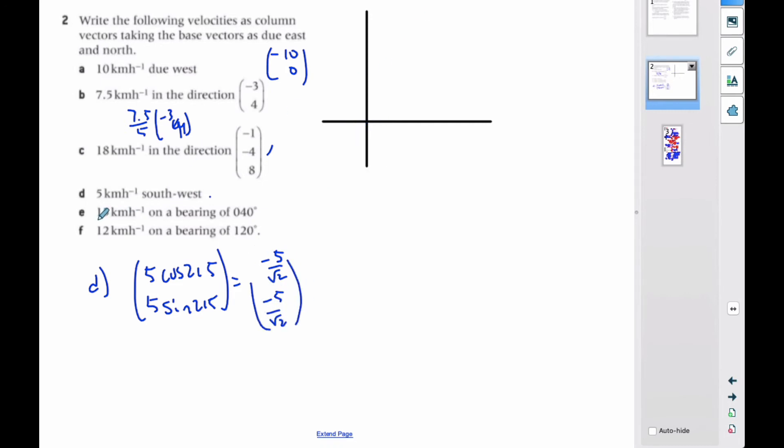So, I want to go E part, 15 kilometers on a bearing of 40 degrees. Well, bearings always start from north, so I want to go 40 degrees in this direction, here, where this angle is 40, which means that this angle is 50 degrees.